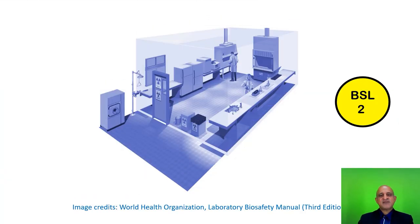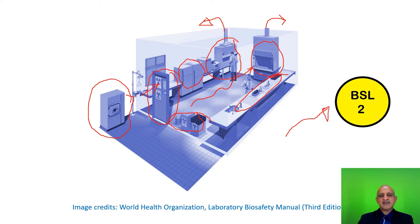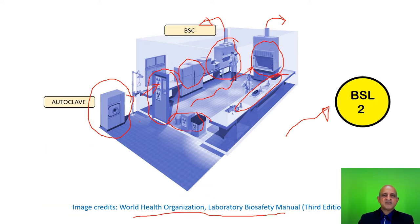This is the layout for a standard biosafety level 2 laboratory. It commences with the location of the autoclave adjacent to the door. The door is equipped with adequate signage and maybe a keypad for entry and access. There are containers for the disposal of waste. The biological safety cabinet and fume hood are located at the far end of the laboratory, ensuring the entire area is clean as air flows over the area and exhausts into the environment via HEPA filter through these two cabinets. There are also suitable working areas and refrigerators for storage of the biological agent.